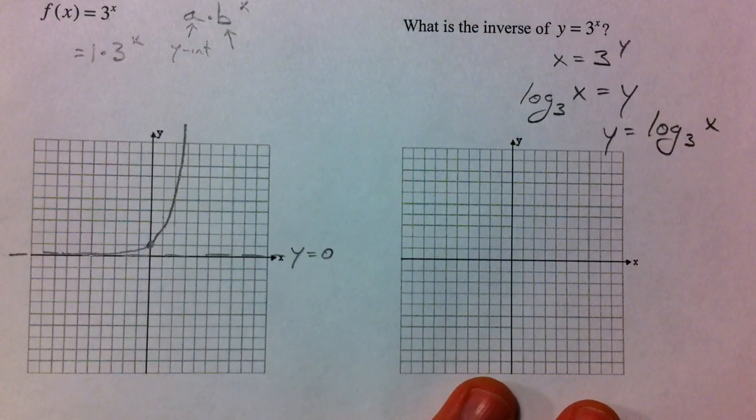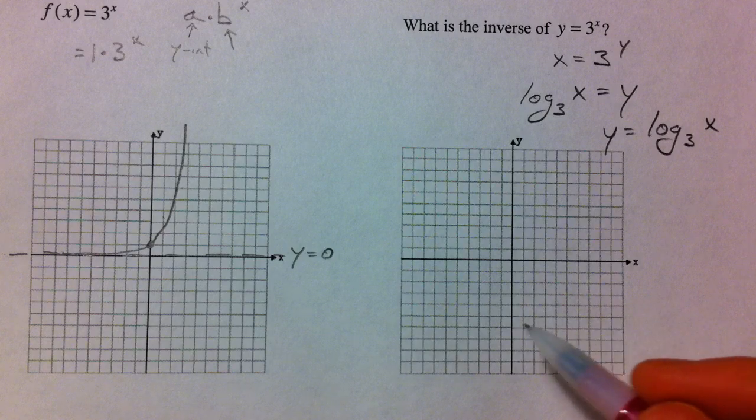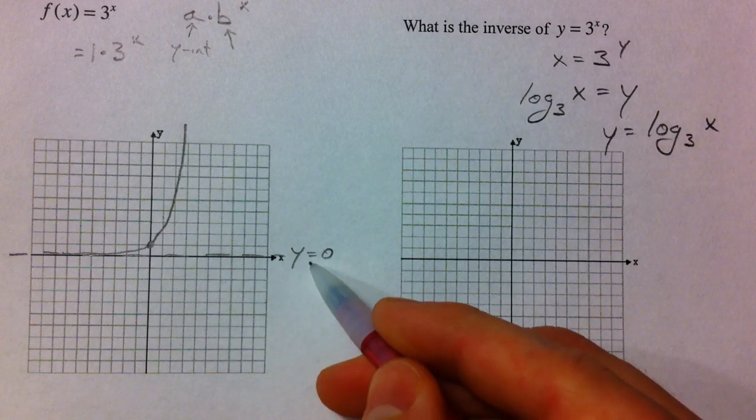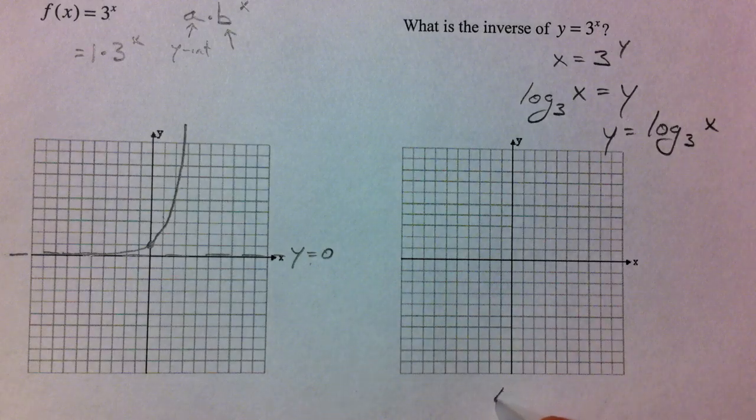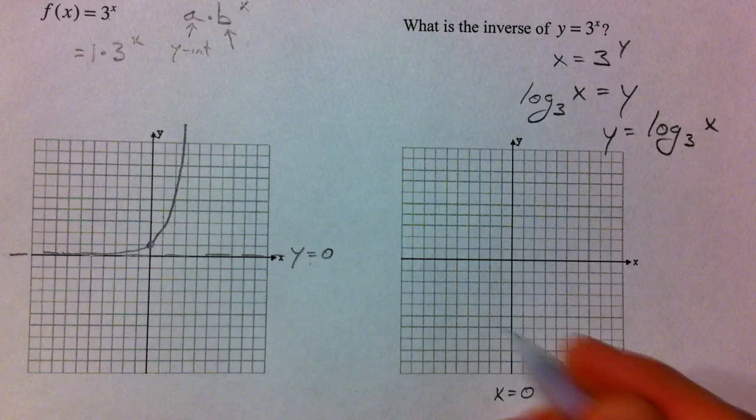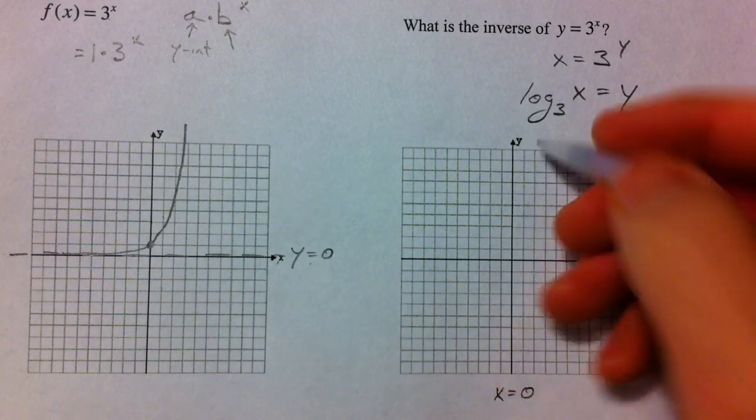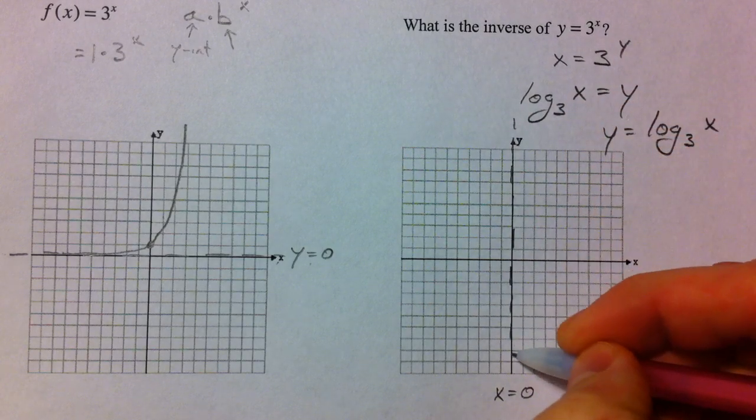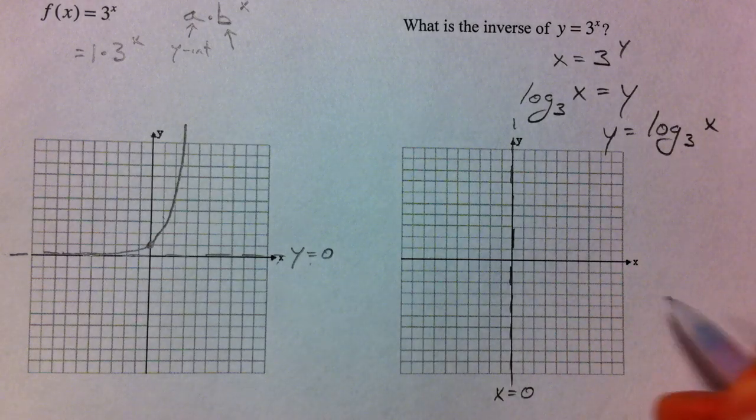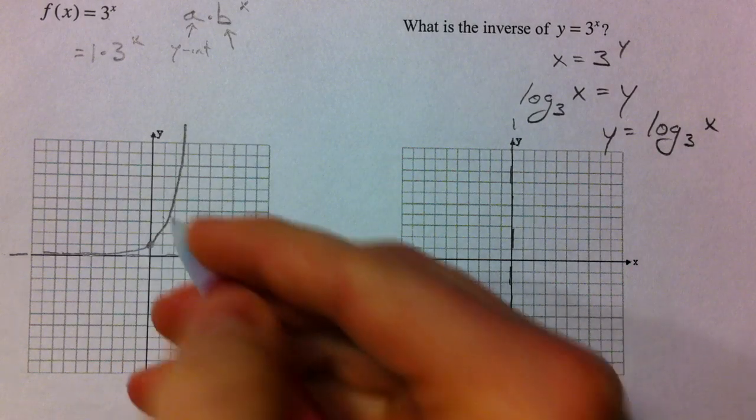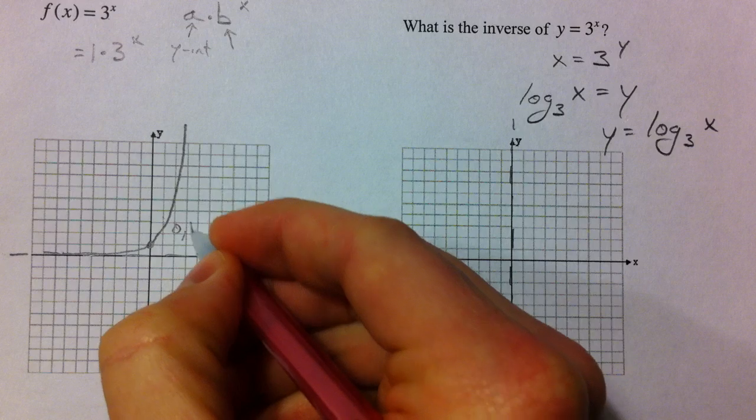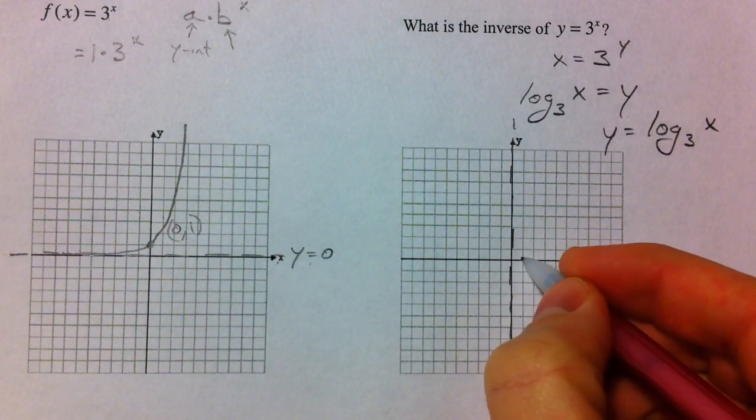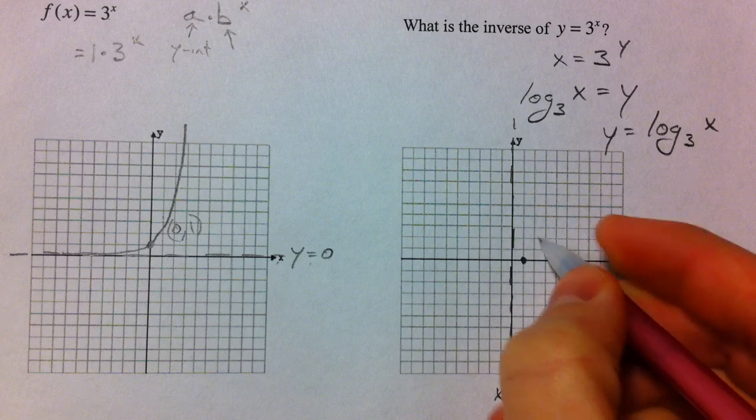So with inverse functions they completely reverse everything, and so y equals 0 becomes an x equals 0. And so your horizontal asymptote becomes your vertical asymptote. Your y-intercept was 0 comma 1 before, and so now our x-intercept is going to be 1 comma 0.